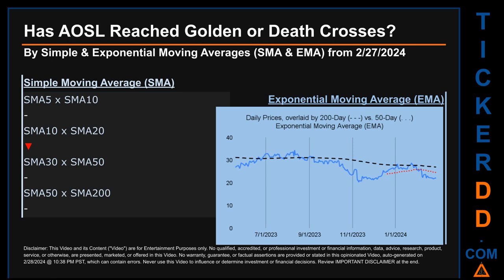Has AOSL price reached golden or death crosses? Golden cross and death cross are basic signals that compare average prices across two specified trade-day ranges — a short-term versus a long-term range, for example 5-day versus 10 trade days. Essentially, a golden cross is a bullish signal that appears when a ticker's short-term moving average crosses above its long-term average. Vice versa, a death cross is a bearish signal when the short-term crosses below its long-term moving average. For our analysis, we looked at both simple moving average (SMA) and exponential moving average (EMA), the latter giving more weighting to recent prices.